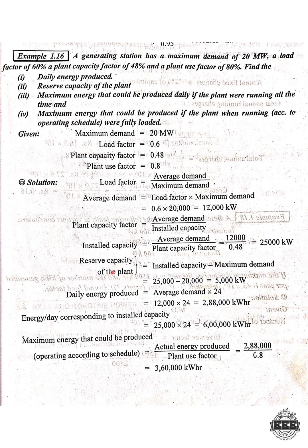Next, the reserve capacity of the plant. Reserve capacity equals installed capacity minus maximum demand. The installed capacity is 25,000 kilowatts and the maximum demand is 20,000 kilowatts. So 25,000 minus 20,000 equals 5,000 kilowatts. So the reserve capacity of the plant is 5,000 kilowatts.